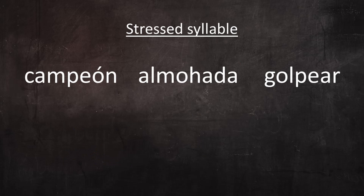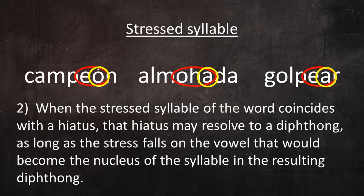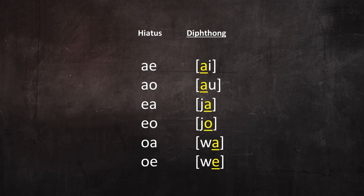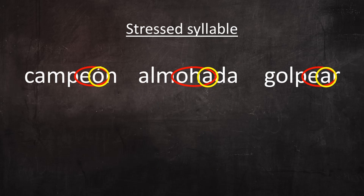In these cases you'll notice that the stressed syllable in the word is one of the vowels of the hiatus. Here is the hiatus, and here is where the stress falls. This brings us to our second phonological rule: when the stressed syllable of the word coincides with a hiatus, that hiatus may resolve to a diphthong, as long as the stress falls on the vowel that would become the nucleus of the syllable in the resulting diphthong. In the resulting diphthongs, the nucleus is the stressed vowel — and this is the case with all three of these examples.